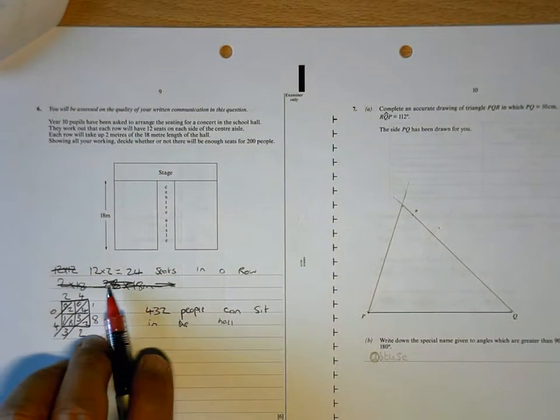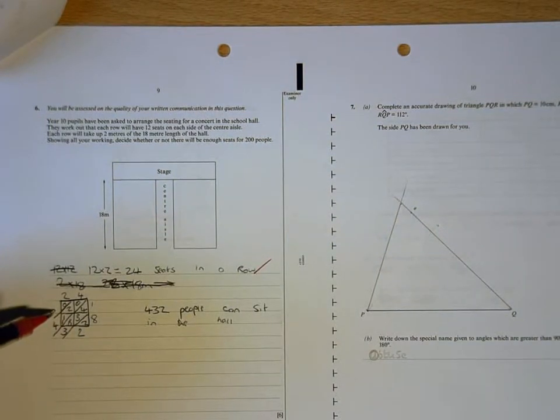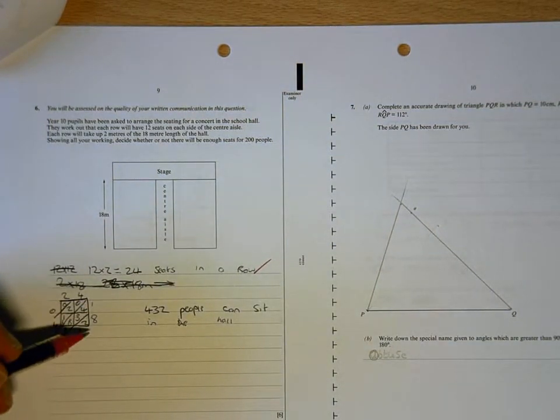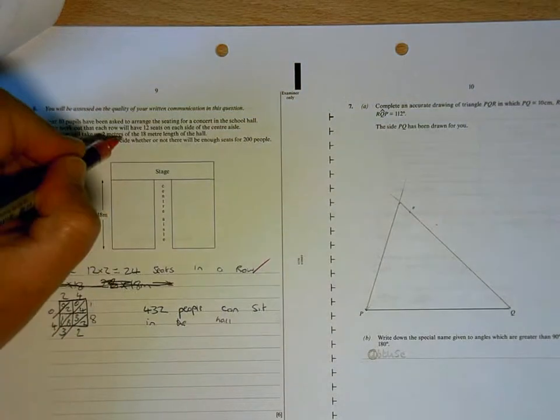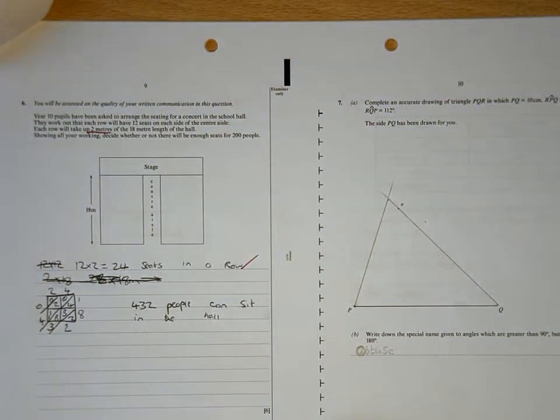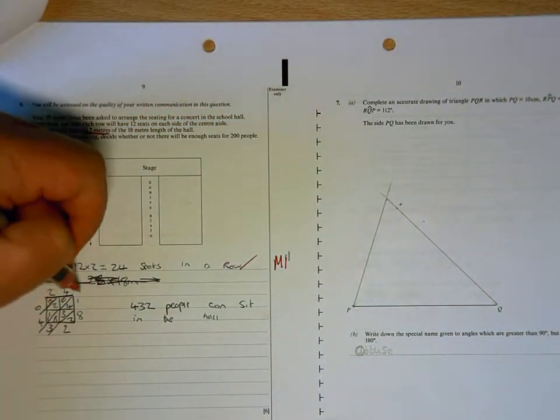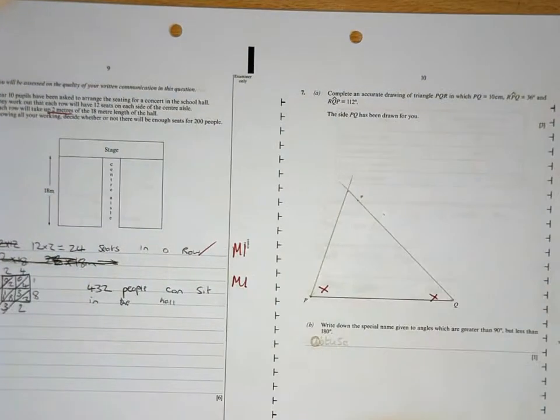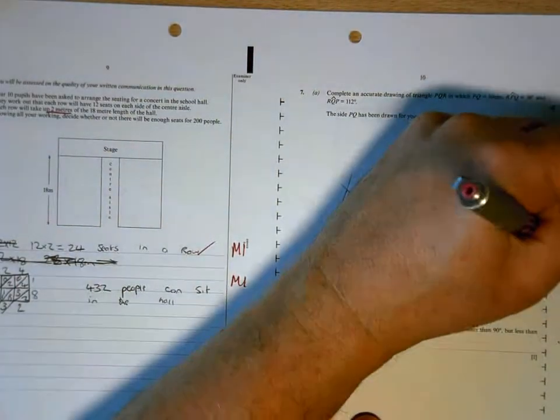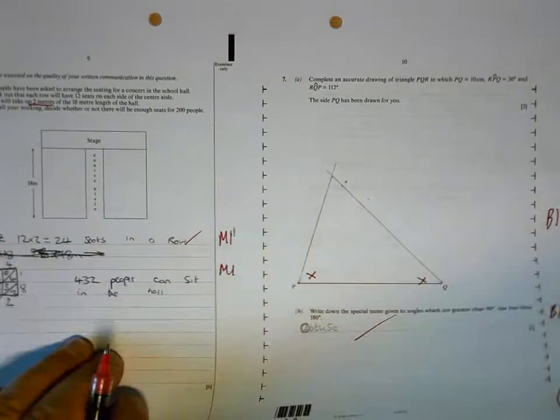Right, so what have we got here? 24 seats in a row. But you are then doing 24 times 18. So you are saying that they only need one metre gap between them, but the question is saying there's 2 metres between them. So you're not going to get that mark. In fact, you will get one mark for the 24 seats in a row. You'll get a method mark for multiplying, but nothing else. That angle is wrong. That angle is wrong, as is that angle. But you get one mark for forming a triangle. And obtuse is right. So 4 marks on that page.